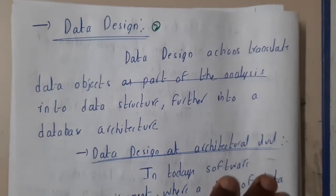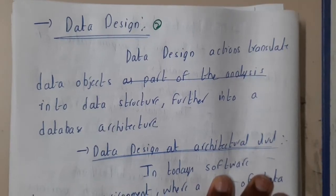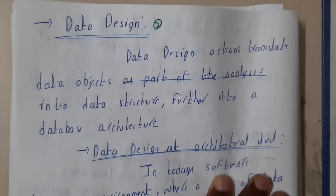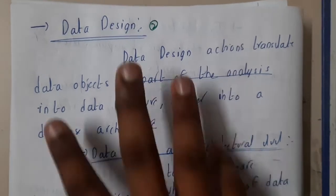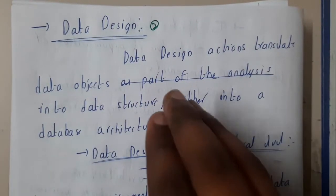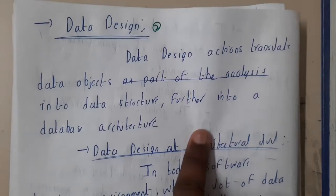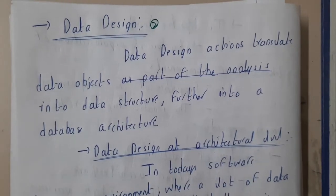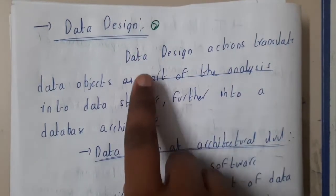Hello guys, we are back with our next lecture. In this lecture, let us go through data design. We'll be going through data design at both the architecture level and the component level. At the architecture level, it is an overview of the whole data, whereas at the component level, you check things based on individual components.